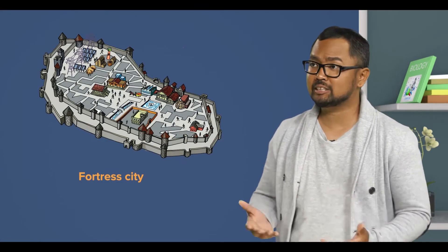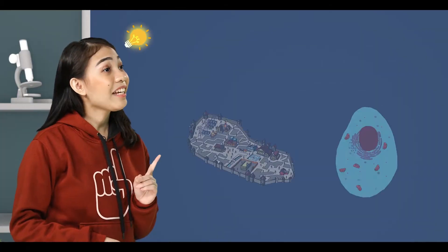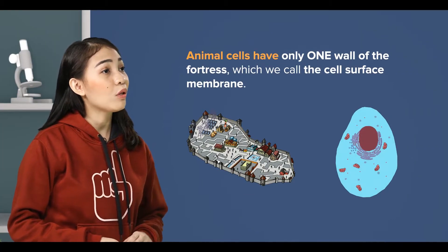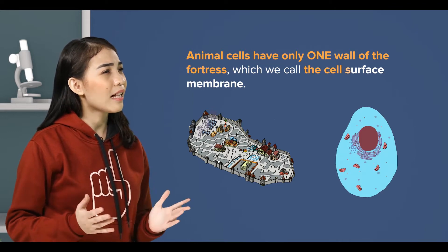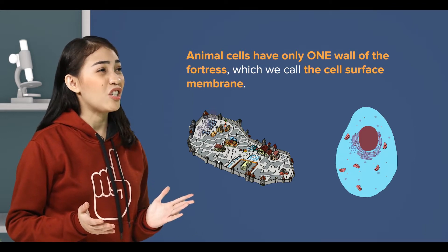Now, let us imagine that a cell is like a fortress city. I know. Animal cells have only one wall of the fortress, which we call the cell surface membrane, or just cell membrane.